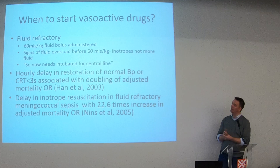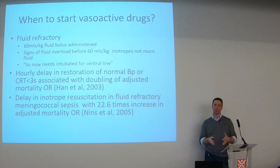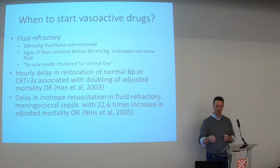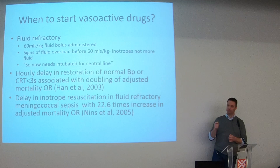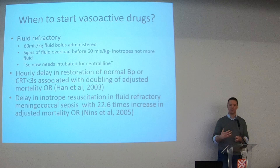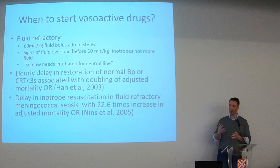When to start vasoactive drugs: if the patient is fluid refractory - you've given your 60 mils per kilo fluid bolus and the patient may have a normal blood pressure but is still mottled, still tachycardic, grunting, with signs of shock not necessarily meaning hypotension and you have not resolved their shock. Even more importantly, don't keep giving fluid if they are already showing signs of overload: check for enlarged liver, basal crackles, and worsening hypoxia.